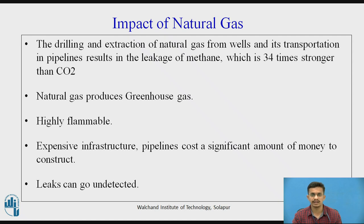Drilling and extraction of natural gas from wells and its transportation in pipelines results in leakage of methane, which is 34 times stronger than CO2. Natural gas also produces greenhouse gases. In power plants, natural gas emits 50–60% less carbon dioxide than regular oil or coal-fired power plants. Natural gases are highly flammable, meaning leaks can result in explosions and disasters. Natural gas is toxic in nature. Gas infrastructure is expensive, and pipeline construction costs a significant amount. Natural gases are odorless, so unless an odorant is added, leaks can go undetected, which can be very disastrous.